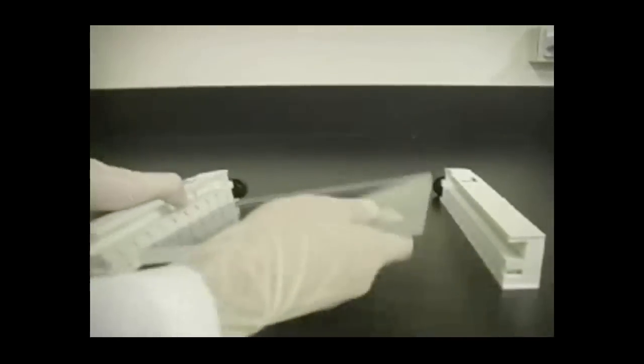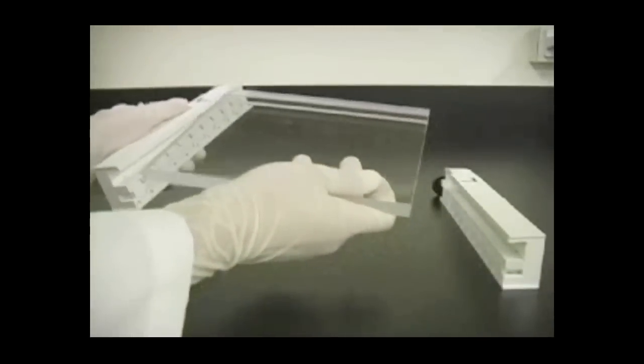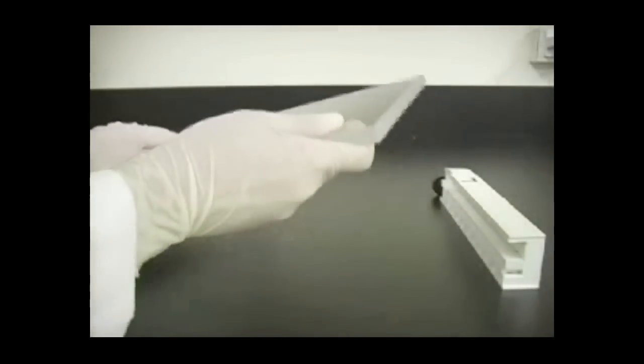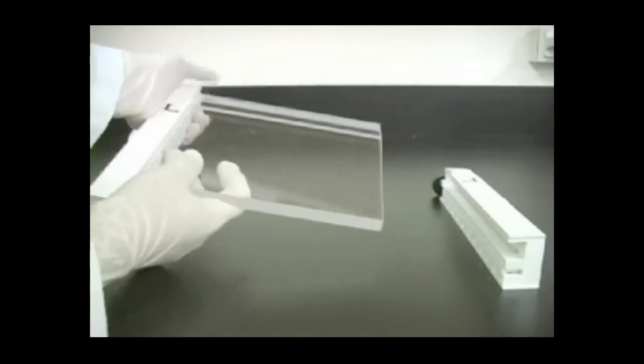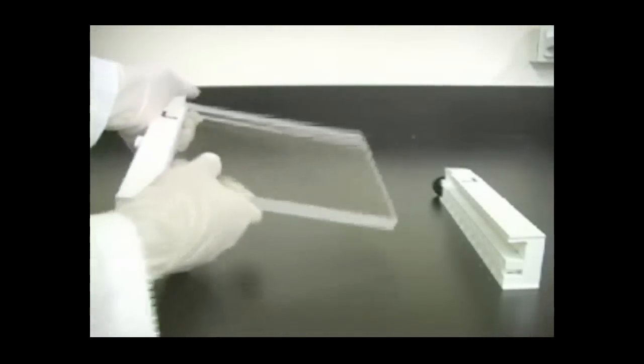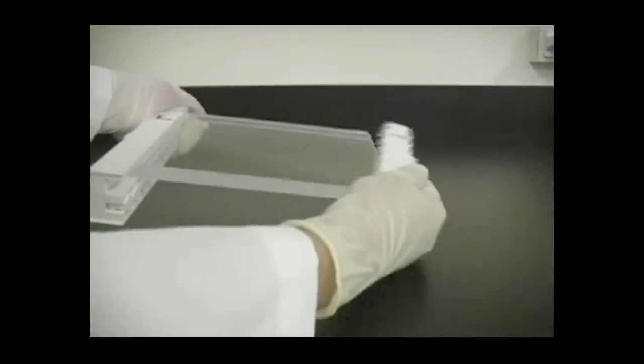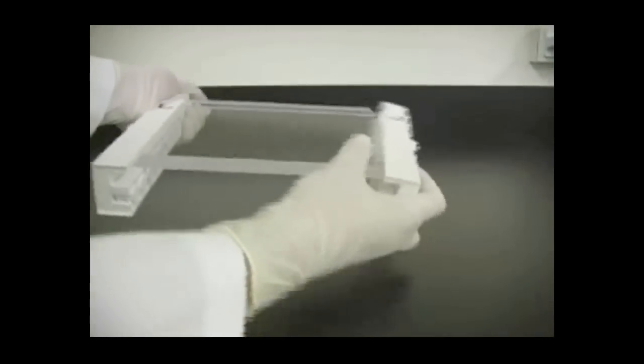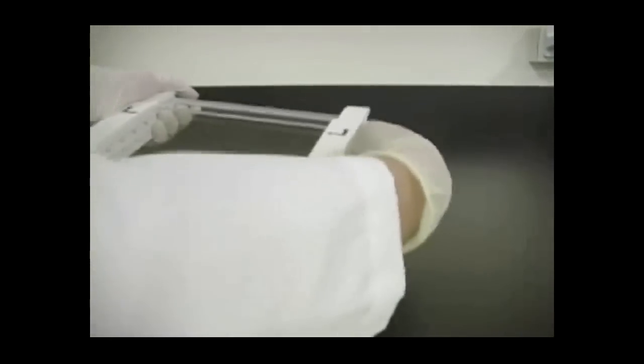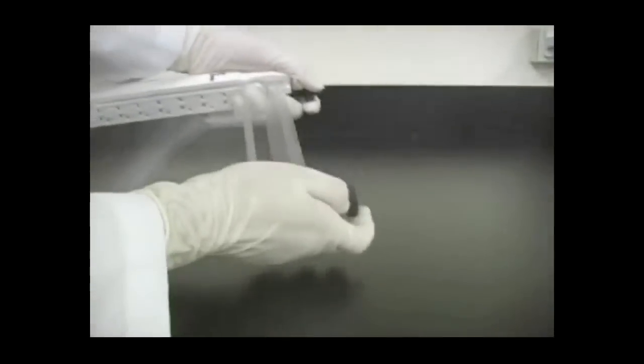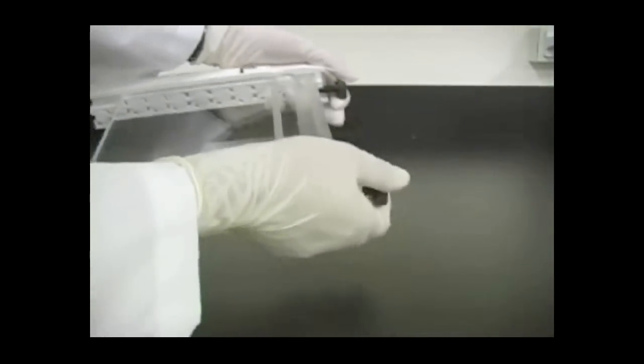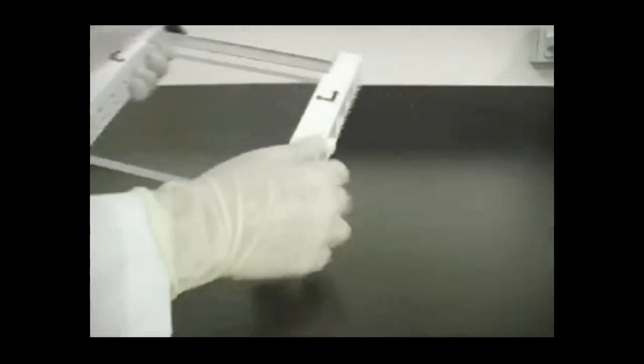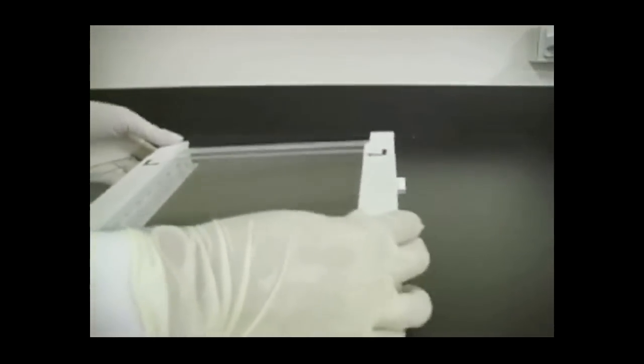If running only one gel, attach the acrylic buffer dam to the unused side of the cooling core. Position the acrylic plate between two clamps, either XI or XL will work, by matching the notches on the clamps to the notches on the acrylic plate, as would be done with a gel sandwich, and slide the dam up each clamp as far as possible. Failure to slide the dam up completely to the top of the clamp will result in an upper buffer leak. No further alignment is necessary.